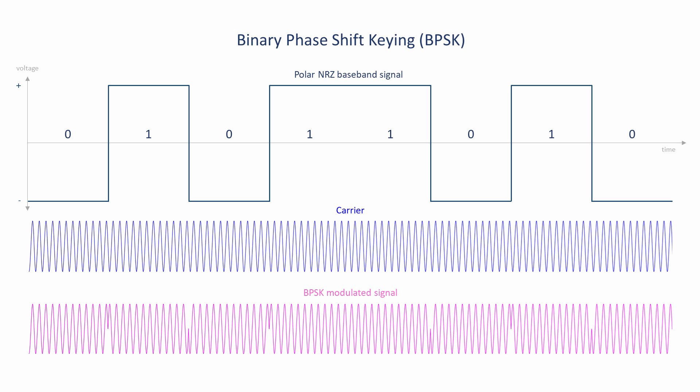This is effectively a phase change. A swing from 0 to 1 in the baseband signal results in a positive phase shift in the carrier of 180 degrees, and a swing from 1 to 0 results in a negative phase shift of 180 degrees.